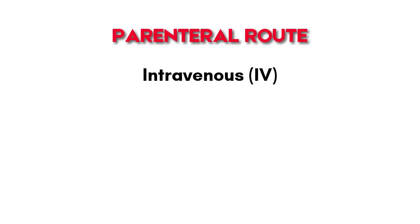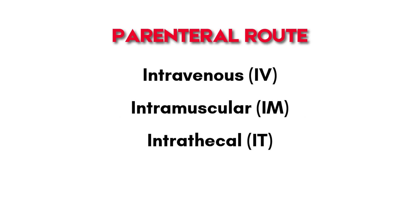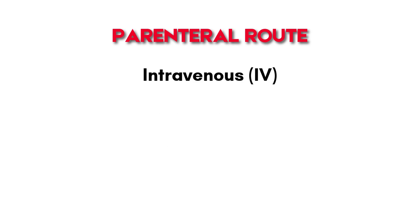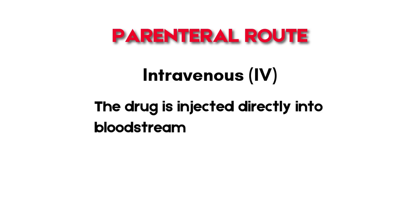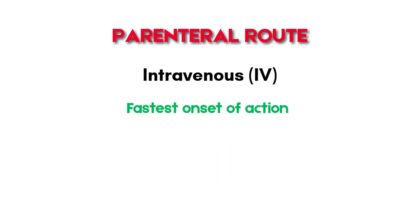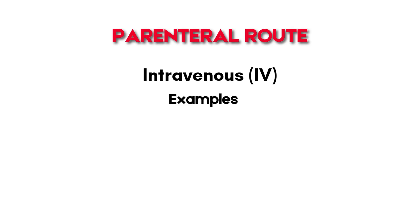The parenteral routes include the intravenous, intramuscular, intrathecal, subcutaneous, and intradermal routes. In the intravenous (IV) route, the drug is injected directly into the bloodstream via the veins. Drugs administered via this route have the fastest onset of activity with a bioavailability of 100%, meaning all the drug enters the systemic circulation. Examples include emergency drugs like adrenaline.